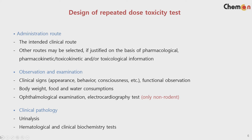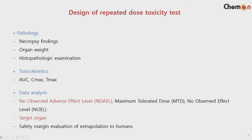For repeated dose toxicity, these are the main points to consider in design. For the administration route, the intended clinical route needs to be considered — for example, if the product is to be taken orally, then the test should also be oral. Other routes may be selected if justified on the basis of pharmacological PK/PD and toxicokinetic background. Observations and examinations include clinical signs, body weight, food and water consumption, ophthalmological examination, and for Beagle dogs, ECG and QT intervals are also examined.